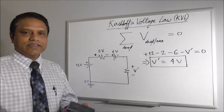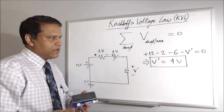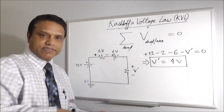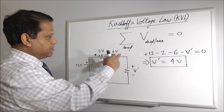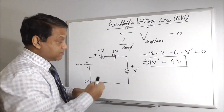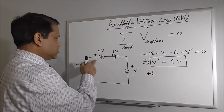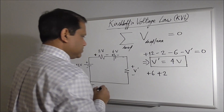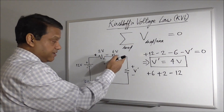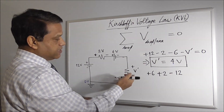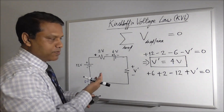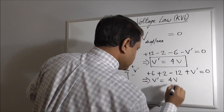If we had started at a different node, would the result be different? No. Suppose we start here and go counterclockwise. We are going from minus to plus, so it is a rise: plus 6. Here it is plus to minus, so minus 2. Then plus 2 minus. We haven't finished the loop yet — we started here and need to go across this element too. Here it is minus to plus, so it is a rise: plus V' equals zero. We have completed the loop, and solving for V' gives the same answer.